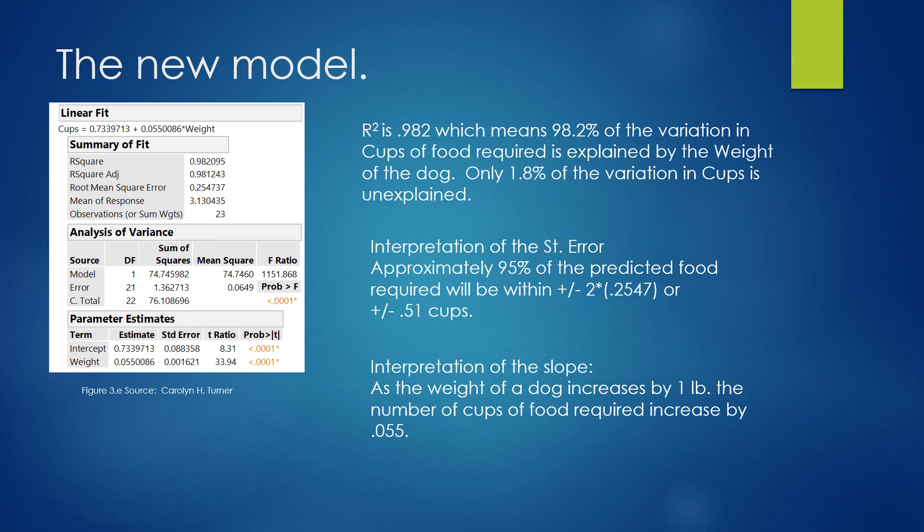After removing the severe outliers, the resulting model is this. Under linear fit, we find the actual regression equation. Cups equals .73 plus .055 times weight.